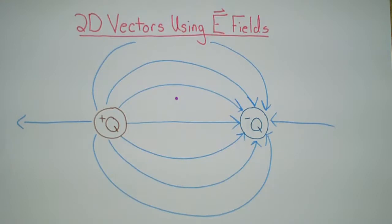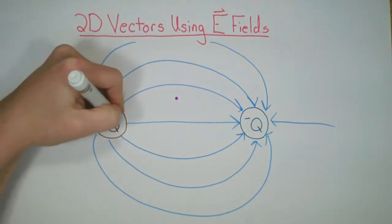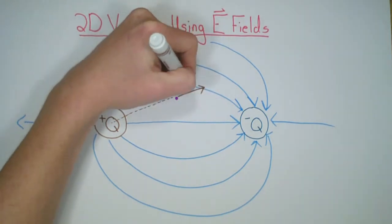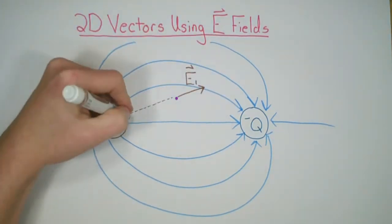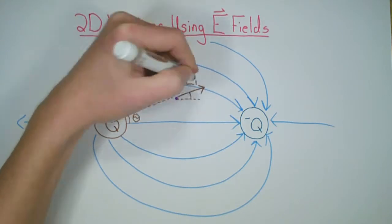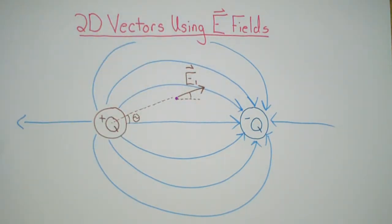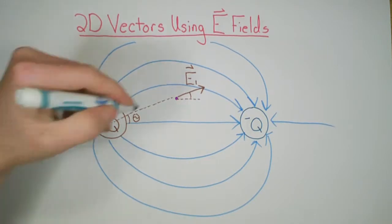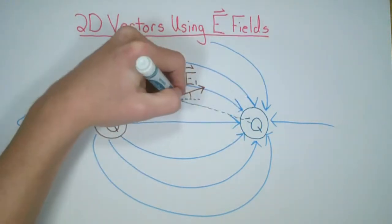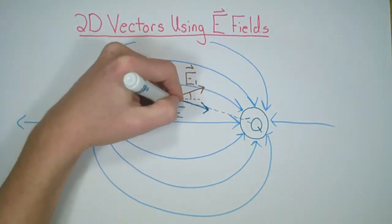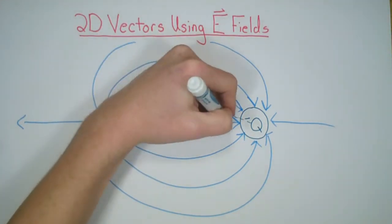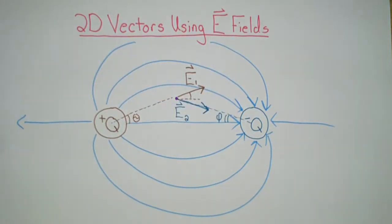If we consider some point within the field, there will be a contribution from the positive charge, which we label E1. It's going to be at some angle theta, since the field line runs out from the positive charge. In addition, there's a contribution from the negative charge, which we call E2. Since field lines run into the negative charge, E2 points toward the negative charge at some angle phi. To find the net field, we consider E1 and E2 independently.